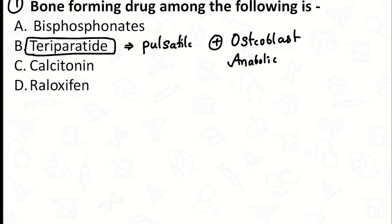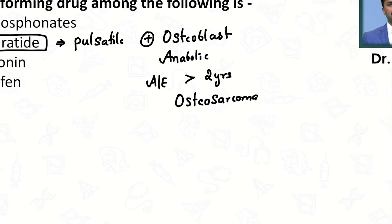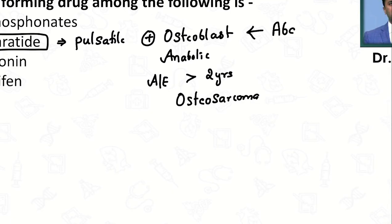The drug should be used only in cases of severe osteoporosis. One problem with the drug is that if used for more than two years, it can increase the risk of a cancer called osteosarcoma. A newer drug with the same mechanism is abaloparatide — so both teriparatide and abaloparatide are bone-forming drugs.